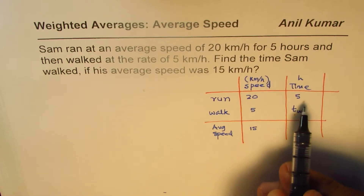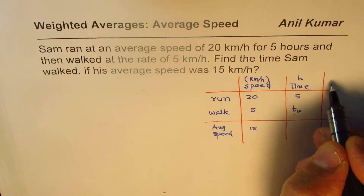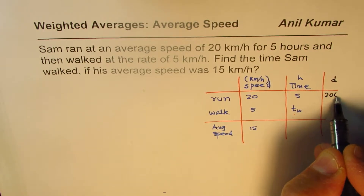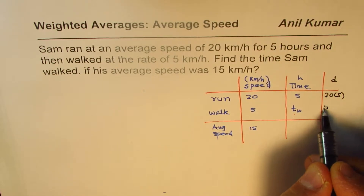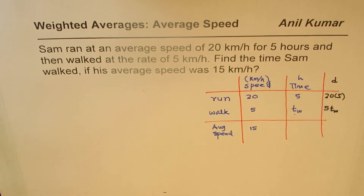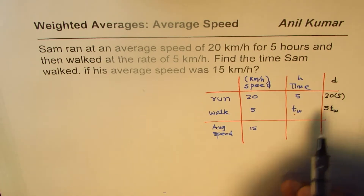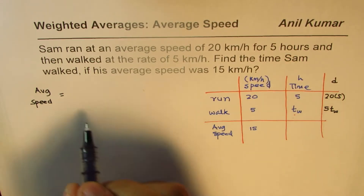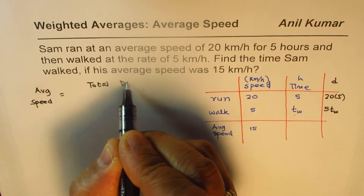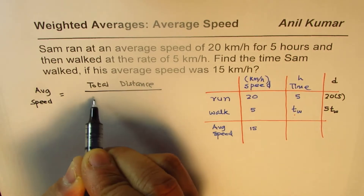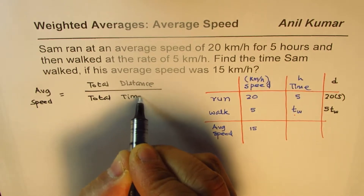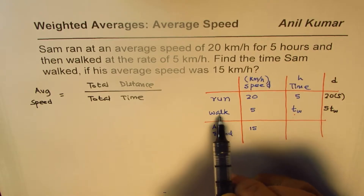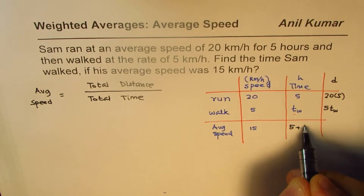So let us find the distance which Sam ran. Distance equals speed times time, so we multiply these two to get the distance. The distance he ran is 20 times 5, and the distance he walked will be 5 times T_walking. The average speed equals total distance over total time. The total time here is 5 hours of running plus we don't know the walking time, so we write it as 5 plus T_walking.